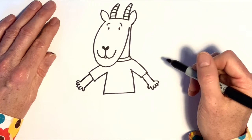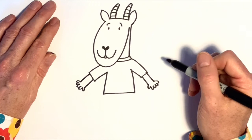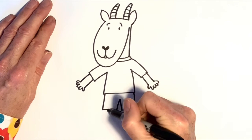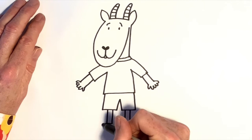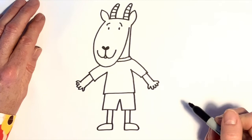What's next? The billy goat's trousers. I think we'll put them in shorts, and add two legs, poking out like that.